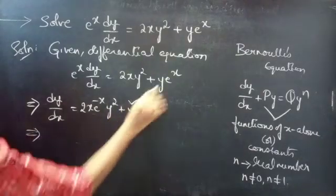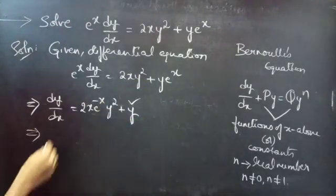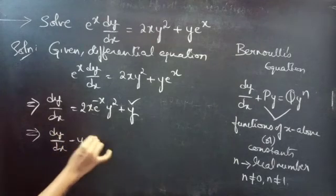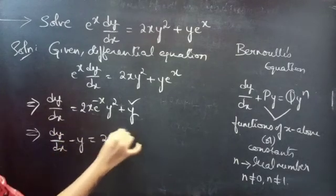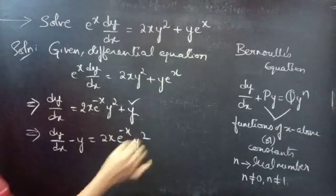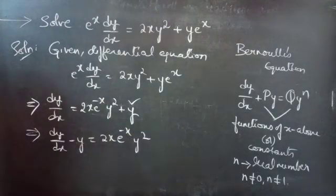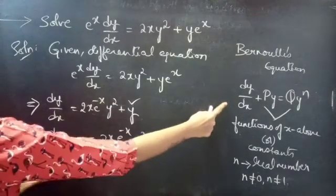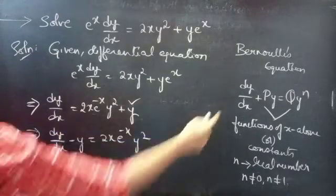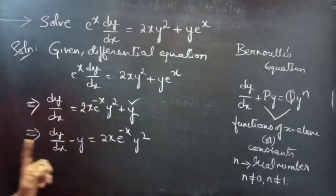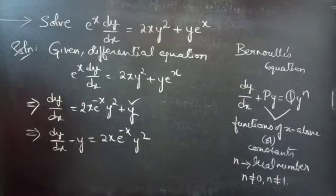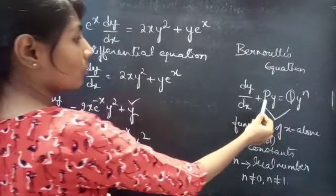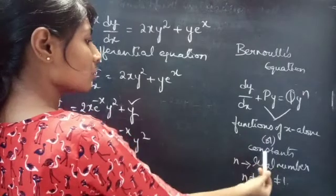Now take y to the LHS. We get dy/dx minus y equals 2x·e^{-x}·y². This is Bernoulli's equation. You can compare it with Bernoulli's equation to find p and q. This is Bernoulli's equation in y, where p and q are either functions of x alone or constants. Here p equals minus 1, which is a constant.